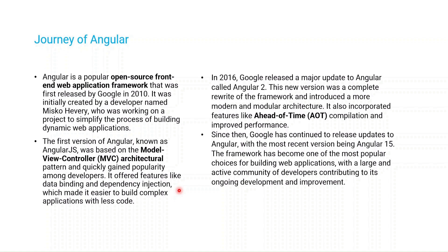AngularJS gained popularity because it offered features like data binding and dependency injection, which made it easier to build complex applications with less code. It was like a CDN — you just import one JavaScript library into your HTML project and it would work. Data binding allows you to bind data directly with your HTML view and JavaScript, which was a really cool feature that we still have today in a far more advanced form.